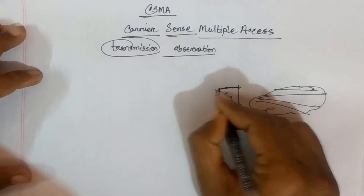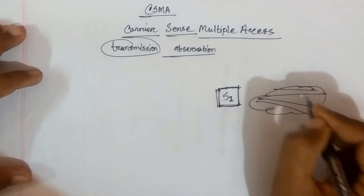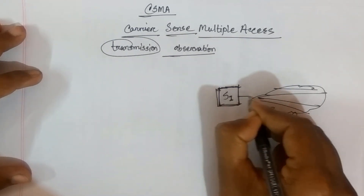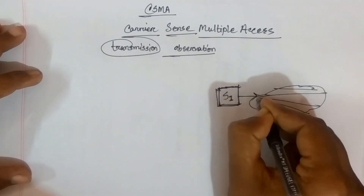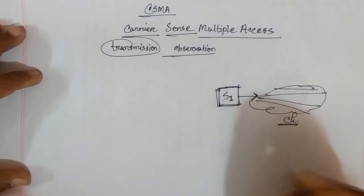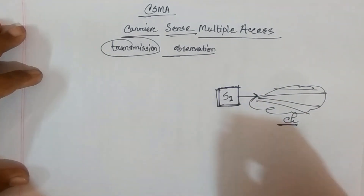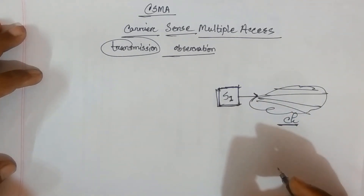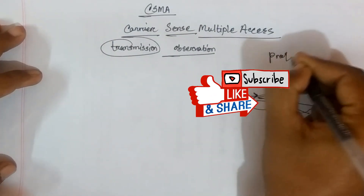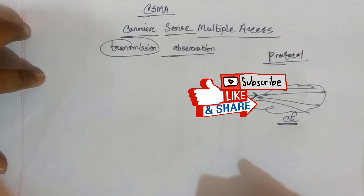The transmission station senses the channel first. Then we decide whether we can get access. If the channel is free, we get permission to transmit. This is a 3-step process.